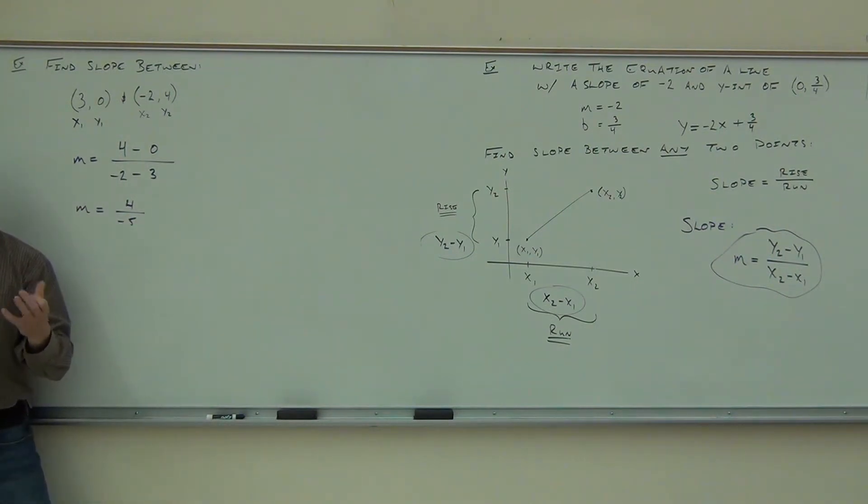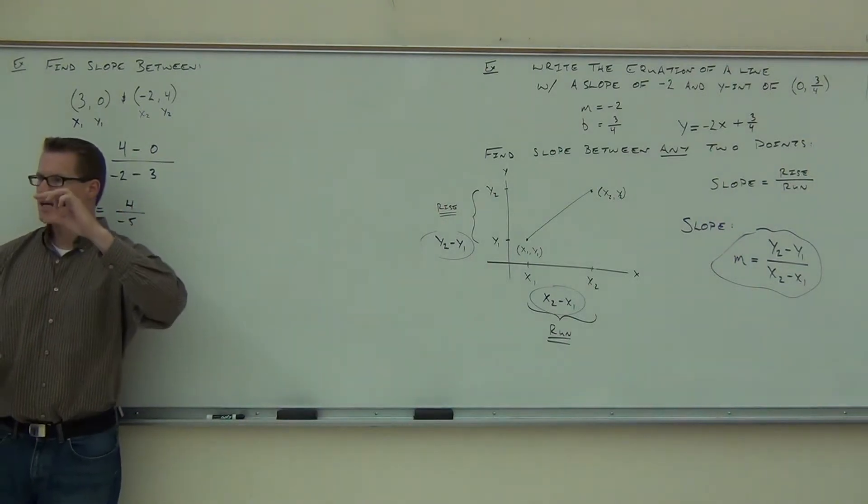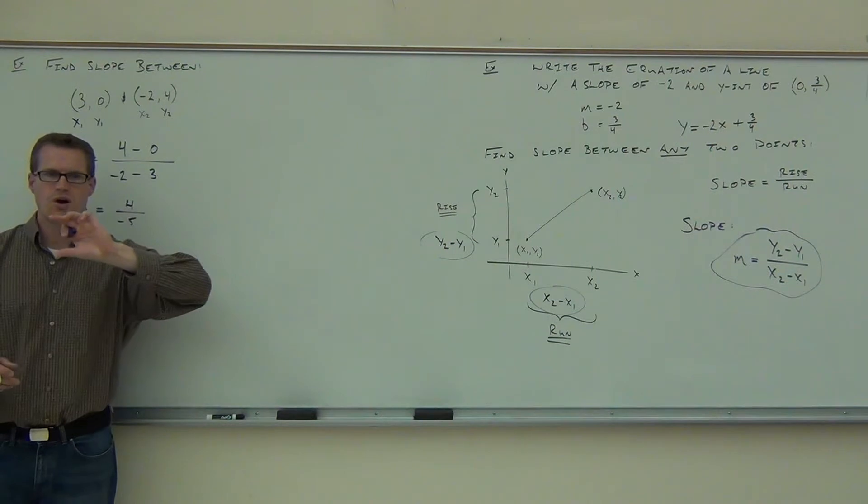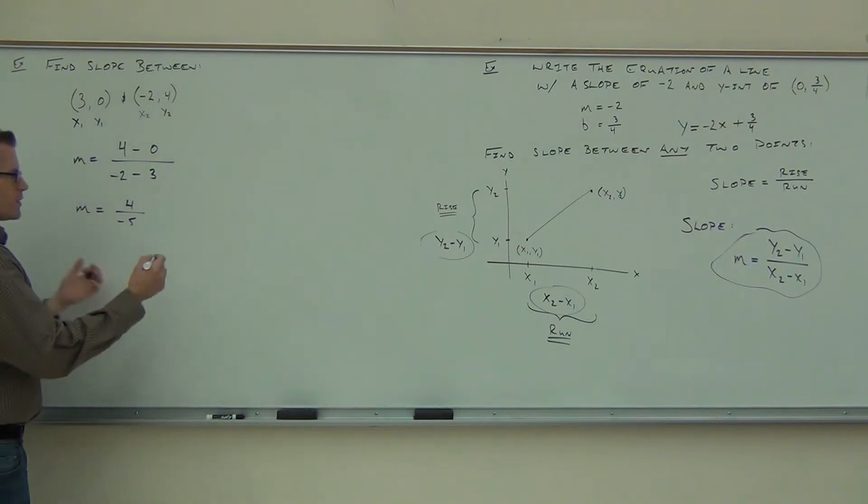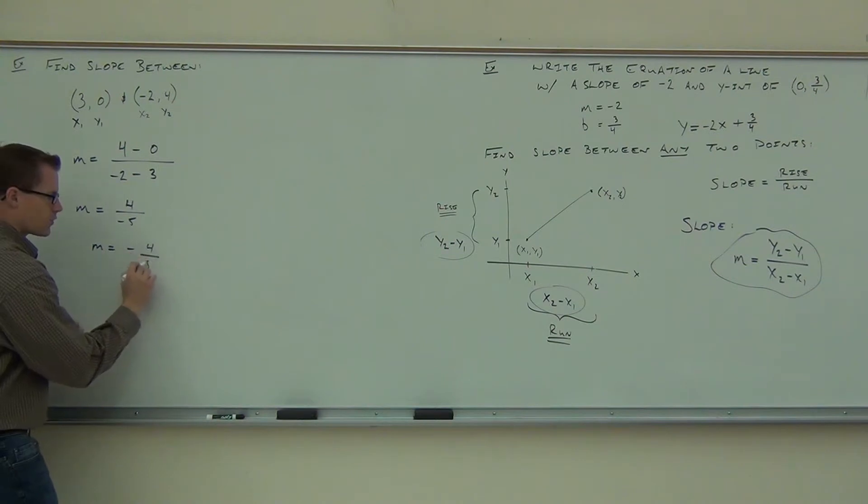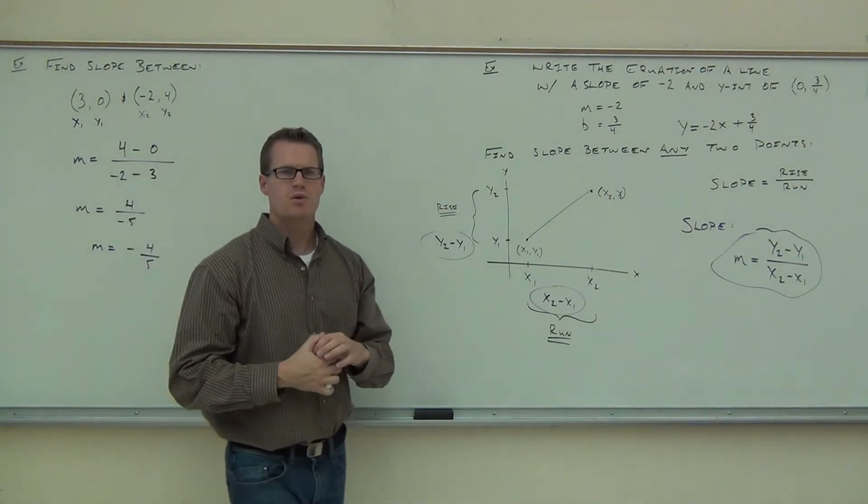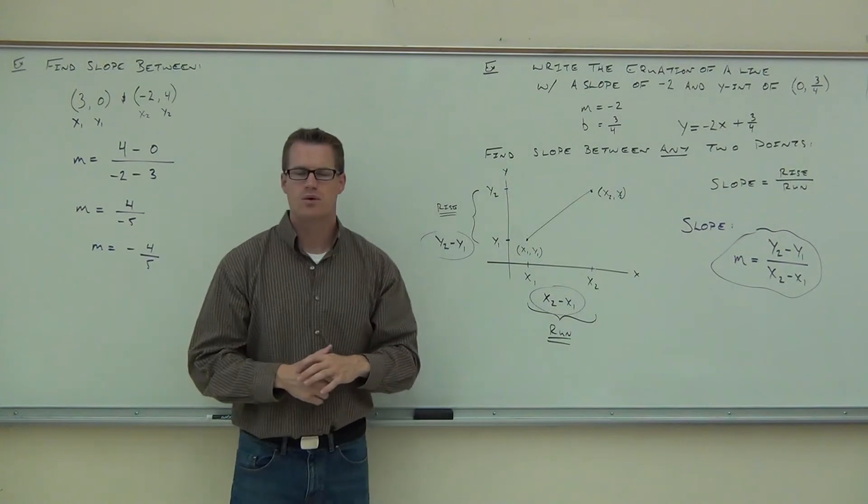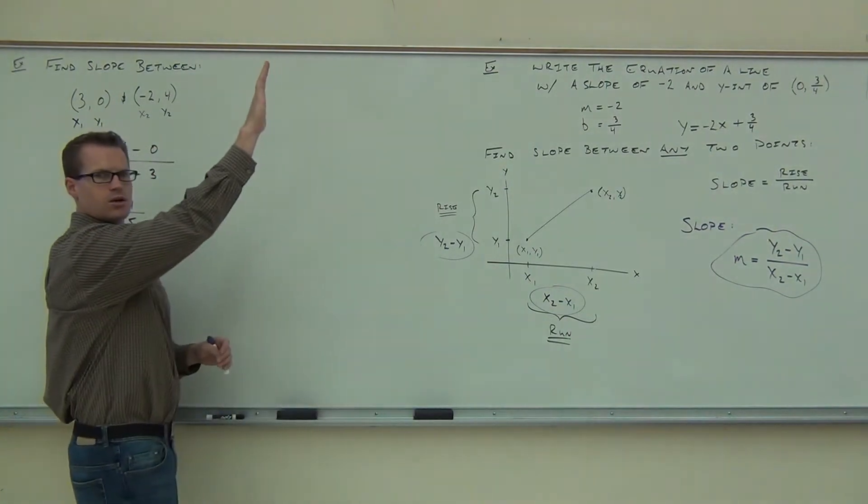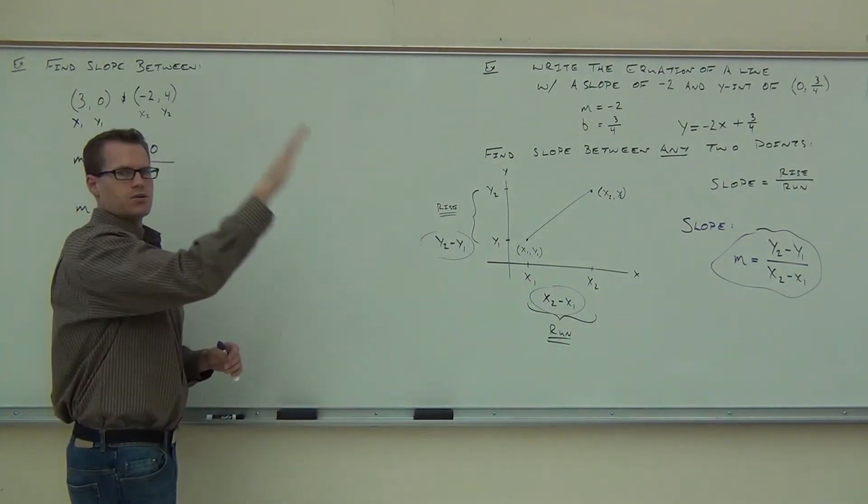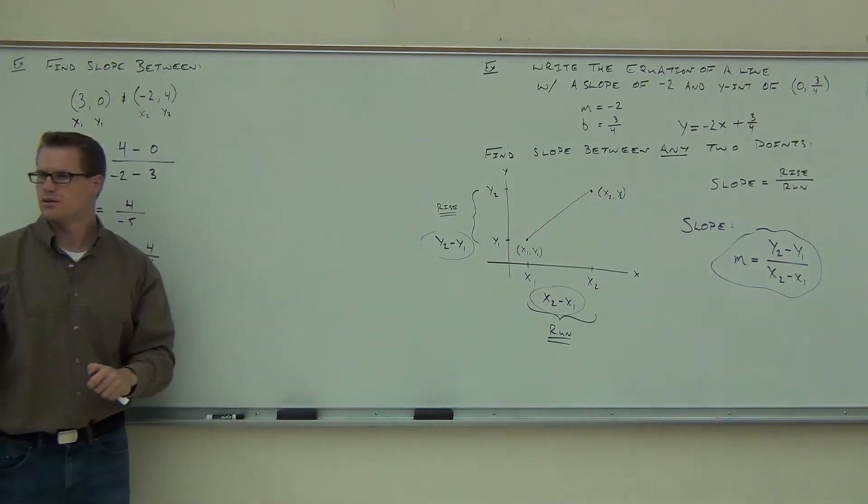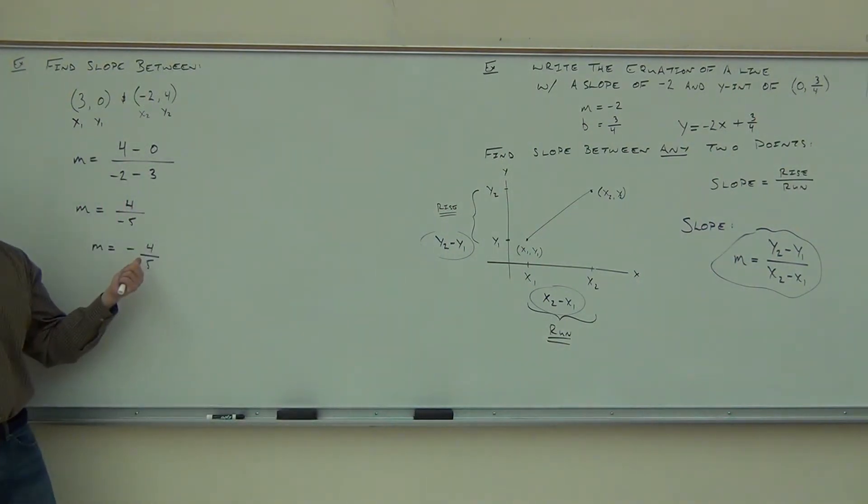Now, I do have to tell you, it doesn't really matter where that negative goes, but we typically will write the slope with a negative out front. I'm going to rewrite this as negative 4 over 5. Show me with your hands, should our graph be going upwards or downwards? Why downwards? Yeah, that's negative, that's a negative slope right there.